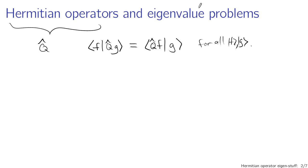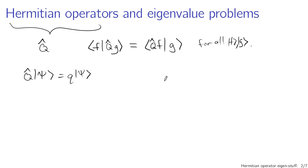In terms of eigenvalue problems, the general statement looks like the operator applied to some general state equals some eigenvalue — lowercase q in the case of operator uppercase Q — multiplied by that state. Applying the operator to the state only changes the overall scaling factor by some amount q. These eigenvalue problems show up in quantum mechanics all over the place. For example, the Hamiltonian operator acting on a state gives you the energy multiplying the state: H psi equals E psi.